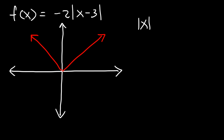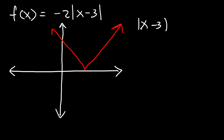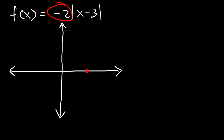If we graph the absolute value of x minus 3, it shifts horizontally 3 units to the right. Now, our original function still shifts 3 units to the right, but because of the negative sign, it opens downward instead of upward, and with a slope of 2, so it's more narrow.